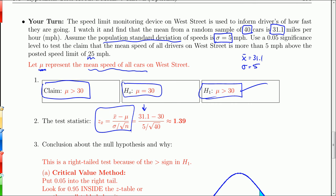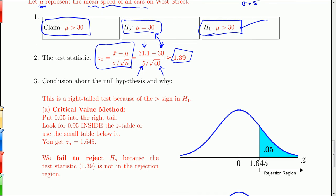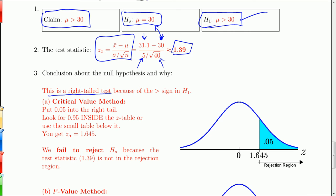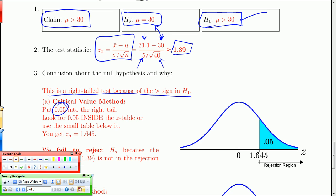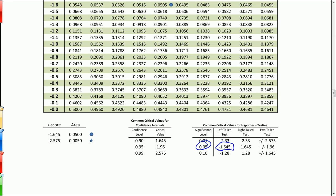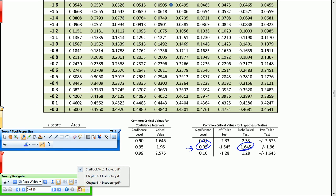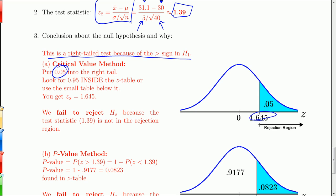There's my test statistic. x̄, 31.1. μ from the null hypothesis right there is 30. There's my population standard deviation and sample size. So I get 1.39 as my test statistic. That's not very big. Things are looking a little risky for my claim. This is a right-tailed test. It's at the 0.05 significance level. So I'm going to go to my z-table. Right-tailed test, 0.05 significance level: 1.645. That is my critical value. So my critical value is 1.645. My rejection region is everything to the right. My test statistic is over here somewhere. It is not in the rejection region. I failed to reject the null hypothesis.